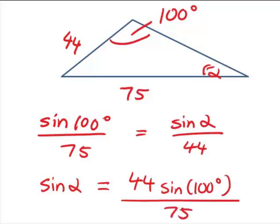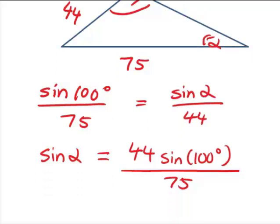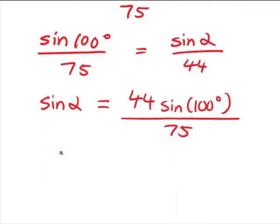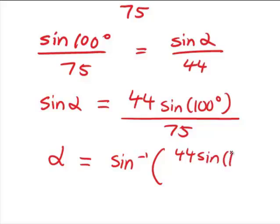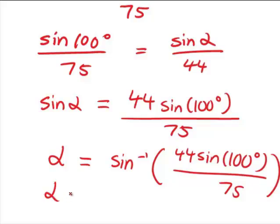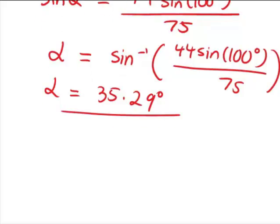And make sure that you know whether you're in degrees or radians. I'm going to do this example in degree mode. Working out alpha will become inverse sine of the expression above. That is inverse sine of 44 sine 100 over 75, so inverse sine of that whole expression, which correct to two decimal places, gives alpha equal to 35.29 degrees. So that's an example of using the sine rule.